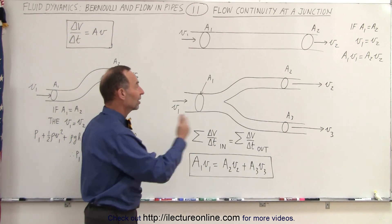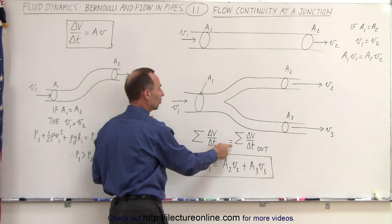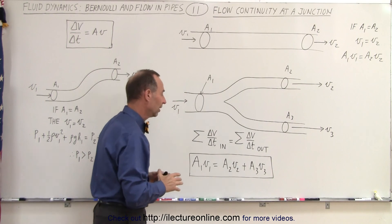Again, the velocities cannot change because of the split. We can still say that the amount of fluid going into the junction must equal the fluid coming out of the junction, and therefore,